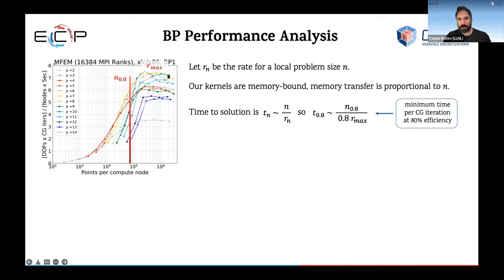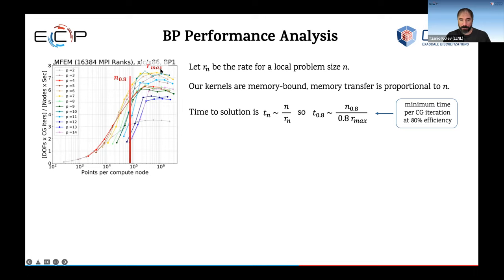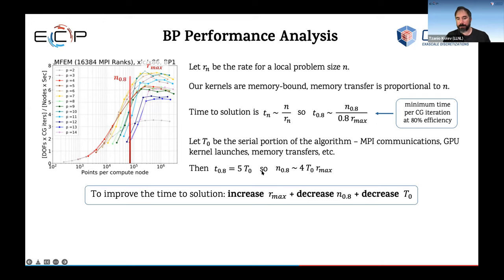Of course if you have a large problem size, you attain a certain maximum performance. You can see on these kinds of plots that higher orders perform better. We're running a number of refinements and MPI tasks so we can compare different orders by the number of degrees of freedom. Order two is here, for example — order one isn't even on this plot — and as you can see, order seven and eight are much better.